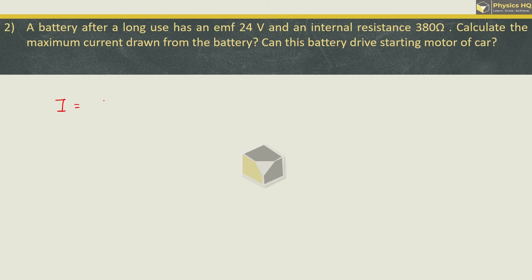Current ka formula hota EMF upon external resistance plus internal resistance. Now when we want the maximum value of current, what we can do is we can make this external resistance equal to 0. Formula becomes E upon r, because resistance opposes the current. If you make it 0 then maximum current will flow. You cannot change small r because that is battery's internal resistance. So we got 24 upon 380, which is 0.068 ampere. This is the maximum current that the battery can provide.